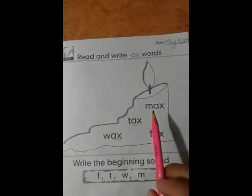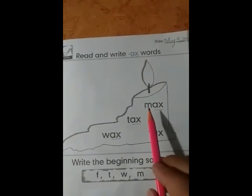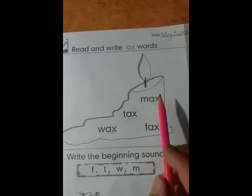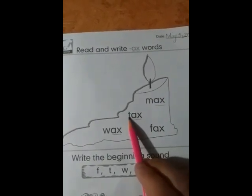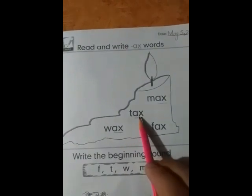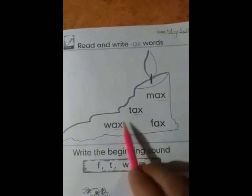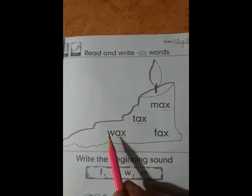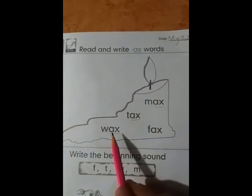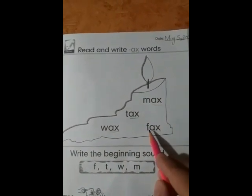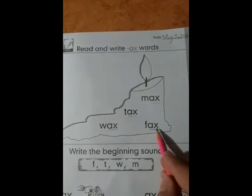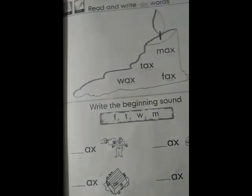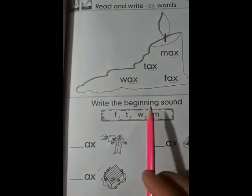Let's start the reading of ax words. There are very few words on this page. The first word is ax max, ax max. Two ax, tax, two ax, tax. Four ax, wax, four ax, wax and the last one is of ax, fax, of ax, fax.